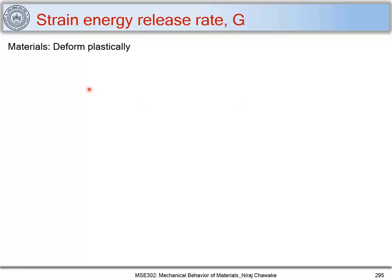In the last part, we saw that Griffith theory is only applicable for brittle materials. But what about when materials deform plastically? In this part, we will be considering one additional term added to Griffith theory so we can use that relation for materials which deform plastically.